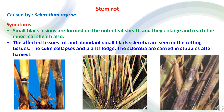Stem rot is caused by the fungus Sclerotium oryzae. Small black lesions are formed on the outer leaf sheath, which enlarge and merge with each other, reaching the inner leaf sheath as well. There will be rotting of the affected tissues, and small black sclerotia are seen on the rotting tissues. The culm collapses and the plant may be lost. The sclerotia are carried in stubbles after harvest.